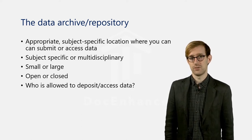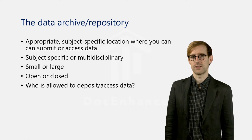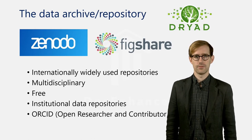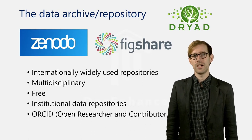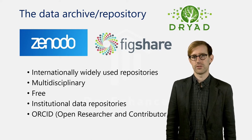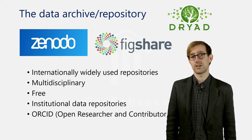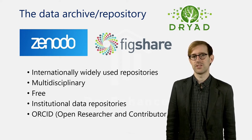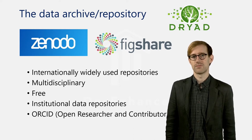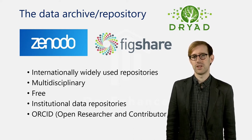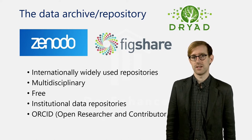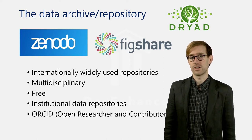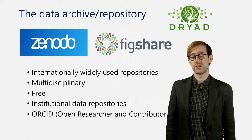Once the data has been shared in the data repository, anyone is free to access it. For those who lack access to institutional repositories, such as independent scholars, the independent research repositories constitute a good alternative. Zenodo, Figshare, and Dryad are some of the most well-known independent repositories. The independent repositories allow anyone to deposit their data, and thereby make it possible for independent scholars to comply with data sharing requirements.